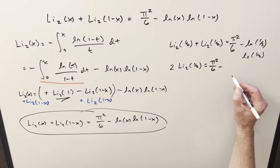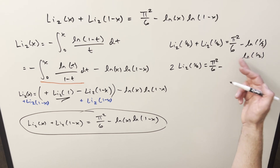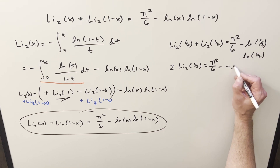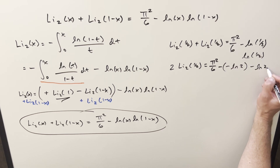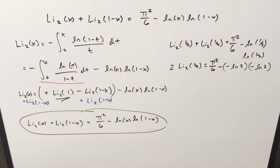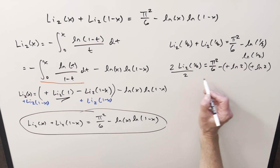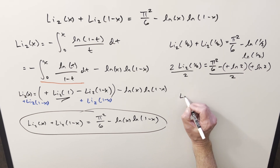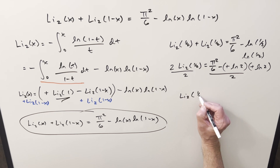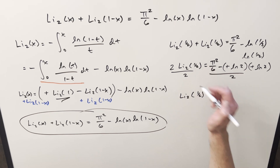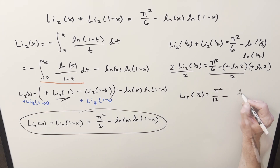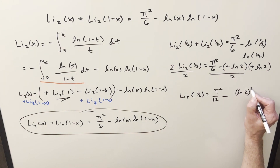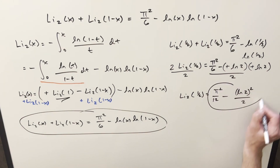We can flip ln(1/2) and bring a minus sign out front to write it as minus ln(2). So minus times minus is plus. Dividing both sides by 2, our value for Li₂(1/2) is π²/12 minus ln²(2)/2. And that's it.